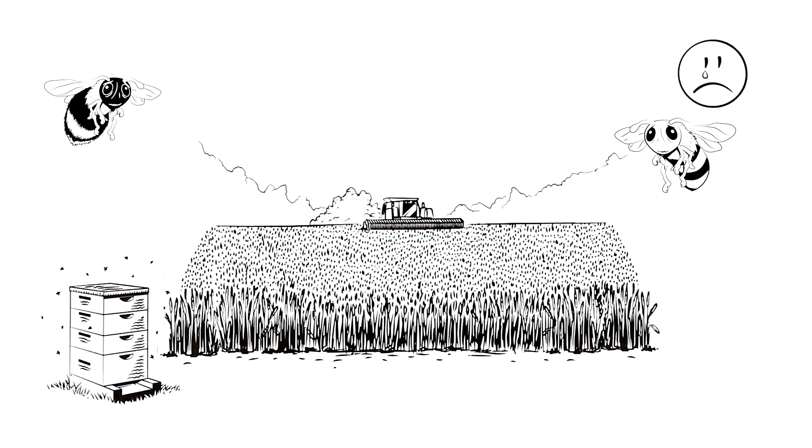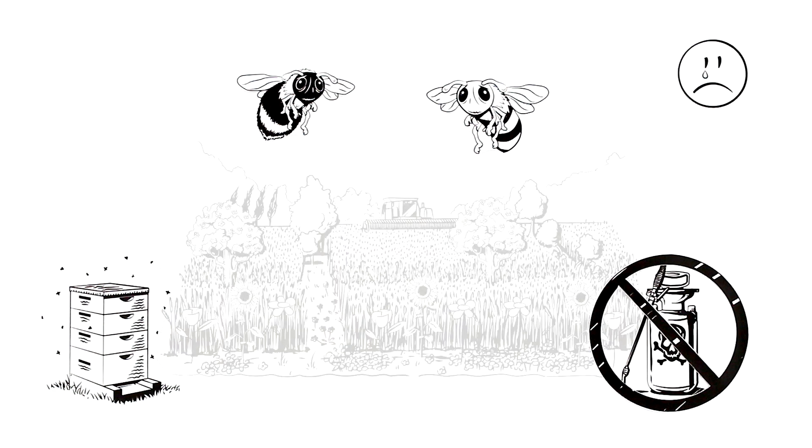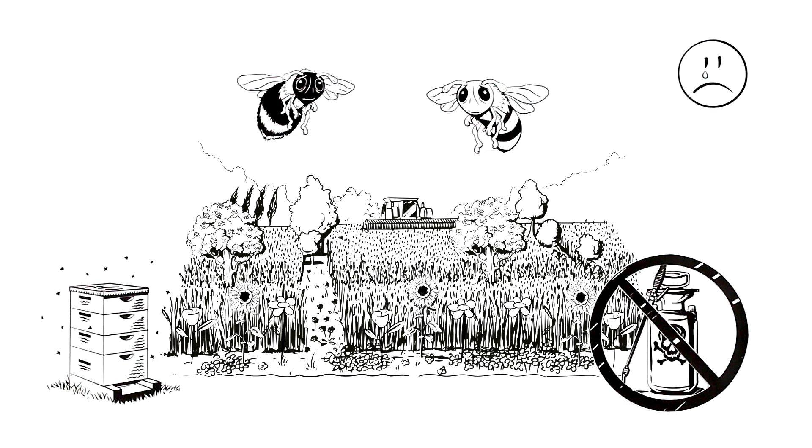It is therefore crucial to preserve the bees' natural habitat in the countryside. Poisonous pesticides also need to vanish from agriculture. Smaller crop fields which provide space for wildflowers and weeds to grow around the edges are a solution to providing nesting space and diverse foods.